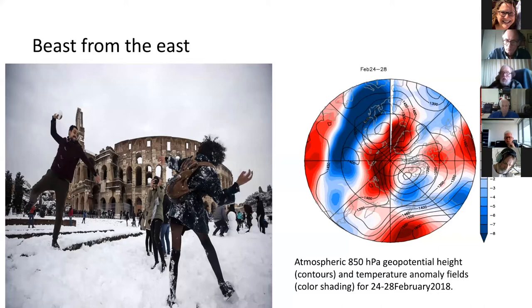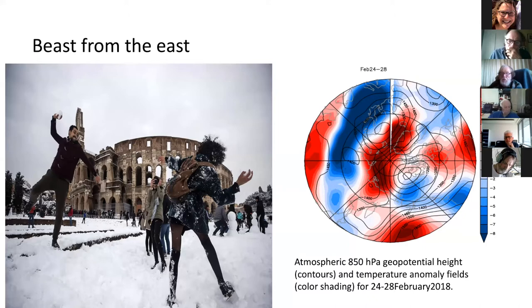If the polar vortex is really weak, you can get high pressure in the lower atmosphere. In the upper part of the map those contours are high pressure, and the wind flows clockwise around that. With that location of the high pressure north of Scandinavia, it pulls cold air right from the central Arctic down over Europe — so in the Beast from the East case, you had cold air over all of Europe, into Italy and England.